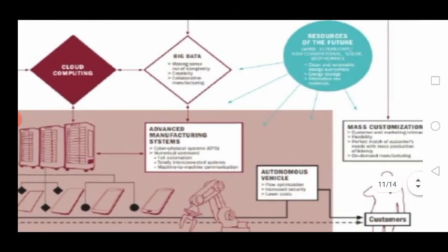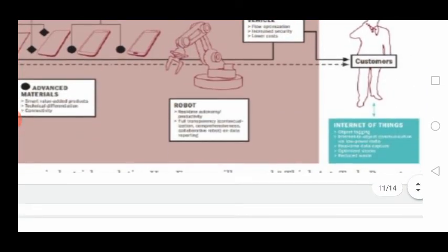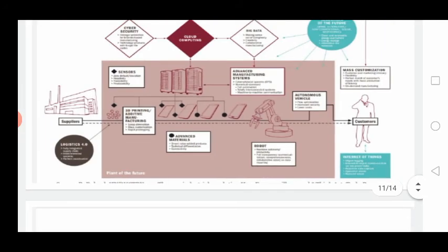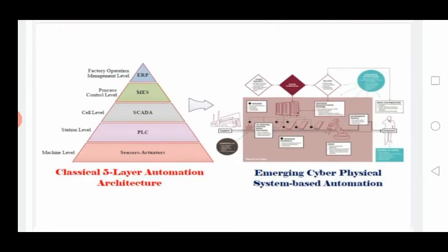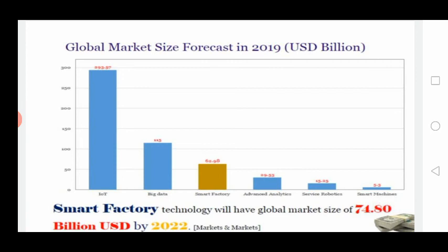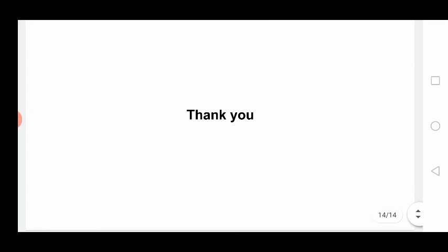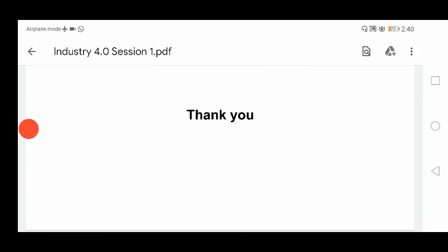Mass customization will be stored and managed through big data, and IoT will also be needed for customer-level integration. These concepts are interrelated and will be studied one by one. The emerging cyber-physical system-based automation is driving demand for the Internet of Things. The global market size forecast for smart factory technology is projected to reach 74.80 billion USD by 2022. This concludes the short introduction to Industry 4.0; the next video will cover the remaining topics in detail.